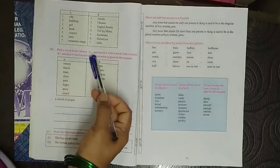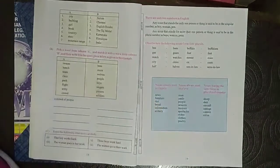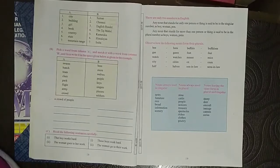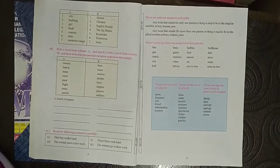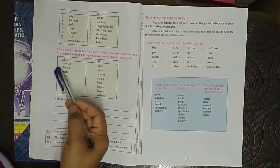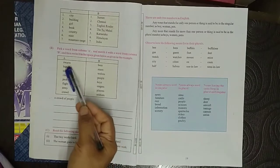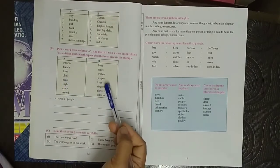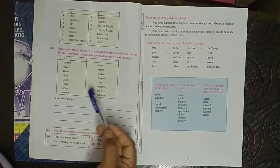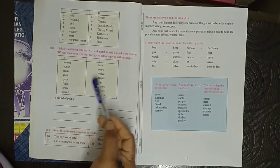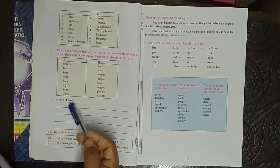Now pick a word from column A and match the word with column B and then write in the space given here. The first one is given to you: a crowd of people. First, a swarm of bees, a bunch of keys, a team of players, a choir of singers, a pack of wolves, a flight of stairs, an army of soldiers, and a crowd of people is already given to you.